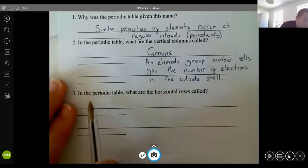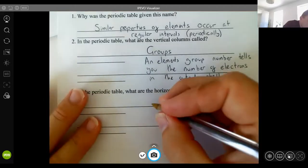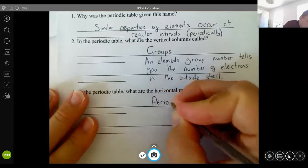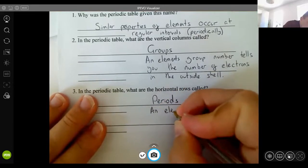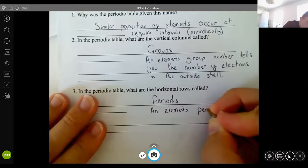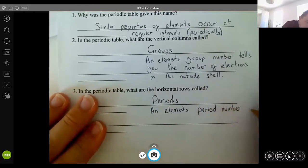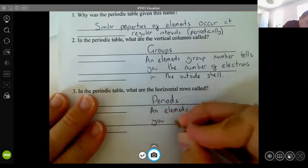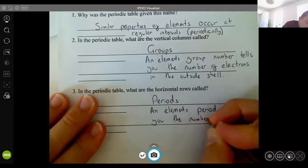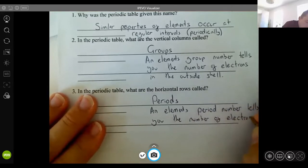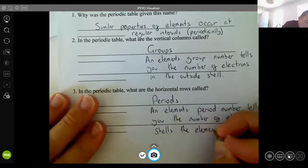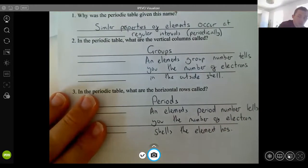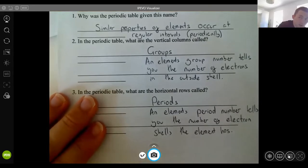Finally, question three, in the Periodic Table, what are the horizontal rows called? Now they are called the periods and they've got a pattern as well. So an element's period number tells you the number of electron shells the element has. So back to the Periodic Table. That means everything in period one has one shell. Everything in period two has two shells. Period three has three shells.